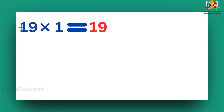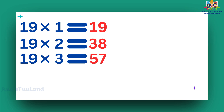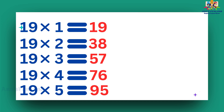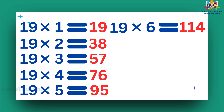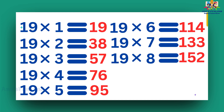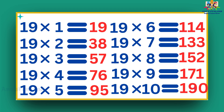19 ones are 19. 19 twos are 38. 19 threes are 57. 19 fours are 76. 19 fives are 95. 19 sixes are 114. 19 sevens are 133. 19 eights are 152. 19 nines are 171. 19 tens are 190.